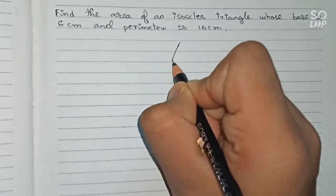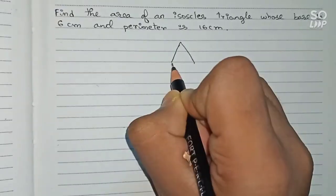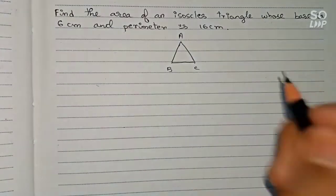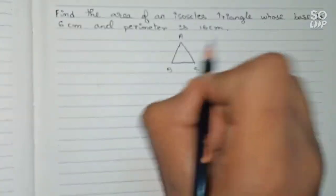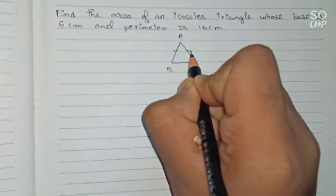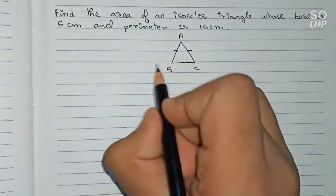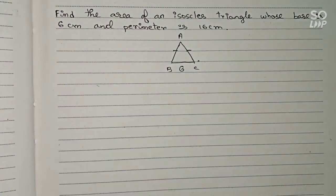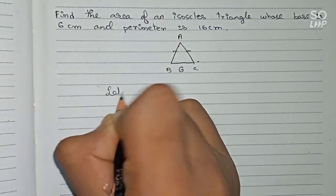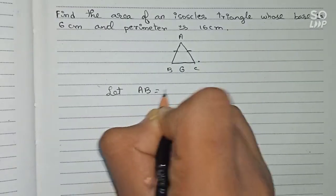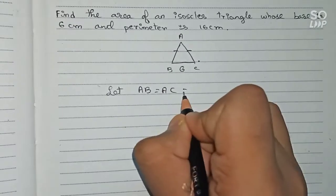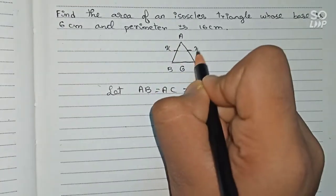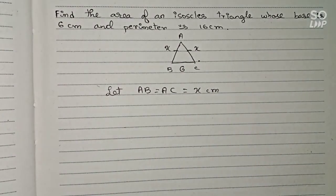Let's draw an isosceles triangle and name it A, B, and C. The two equal sides AB and AC are not given, and the base BC is given as 6 centimeters. Let AB equal AC equal x centimeters. So this side is 6 centimeters and these two sides are x centimeters each, and we need to find the value of x first.